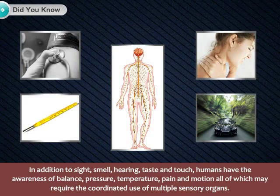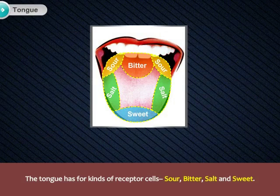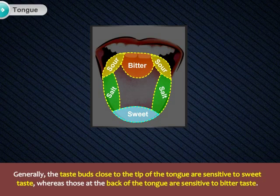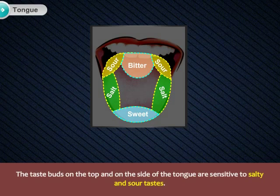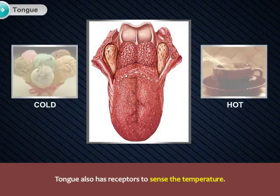The tongue has four kinds of receptor cells: sour, bitter, salt, and sweet. Generally, the taste buds close to the tip of the tongue are sensitive to sweet taste, whereas those at the back of the tongue are sensitive to bitter taste. The taste buds on the top and on the side of the tongue are sensitive to salty and sour tastes. The hot taste of chilies is not a taste, but a physical sensation which irritates the tongue. The tongue also has receptors to sense temperature.